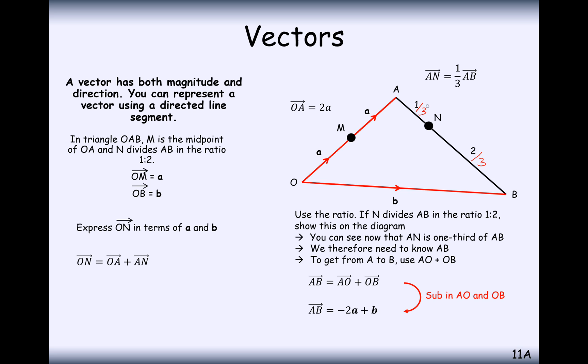The distance from A to B is going to be—we need to go back to O and then along to B. So we're going backwards by 2a's, then we add a b. But if we want the vector from A to N, we're going to have to take a third of this. So A to N is the vector minus two-thirds a, add a third b.